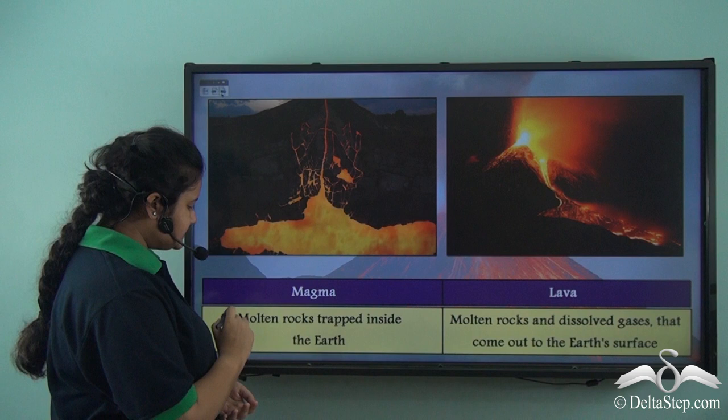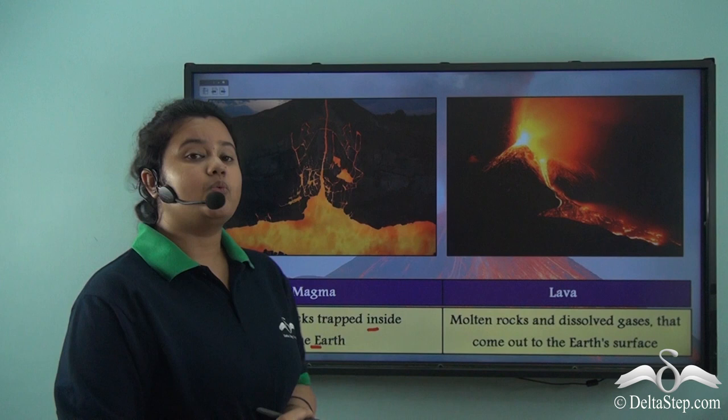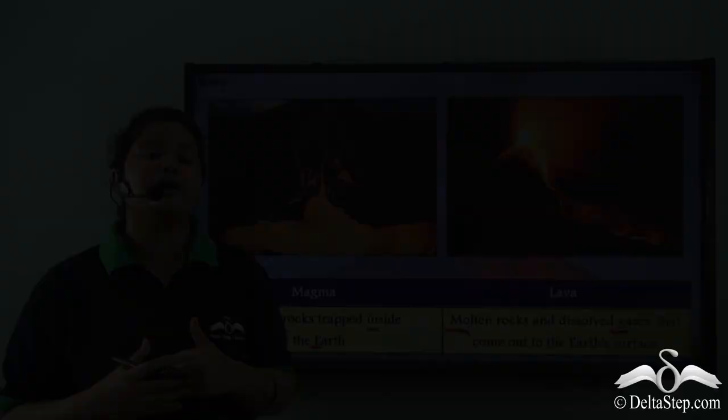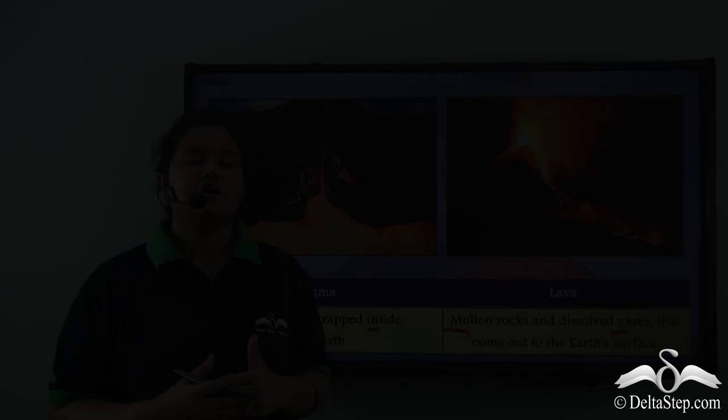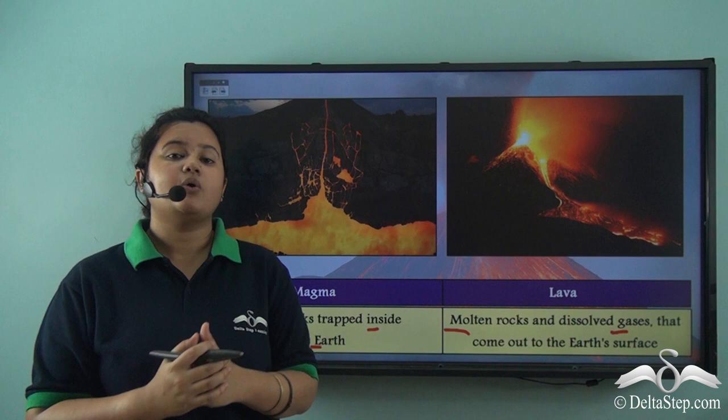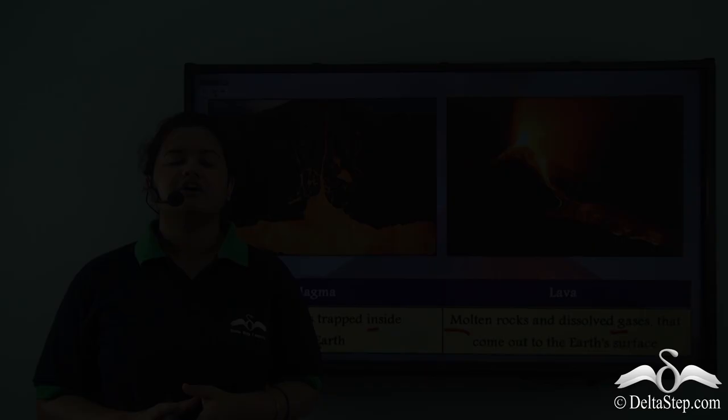While lava is a stream of molten rocks and dissolved gases that come out to the Earth's surface during a volcanic eruption. So the molten rocks is called magma when they are present beneath the Earth's surface, while the molten rocks is known as lava when they come out to the Earth's surface.